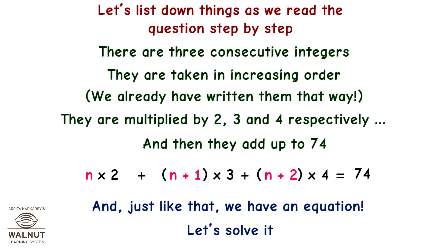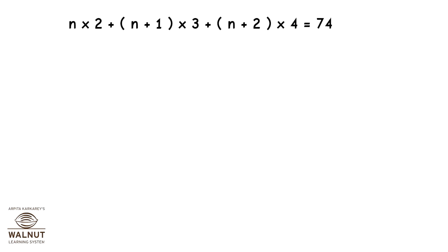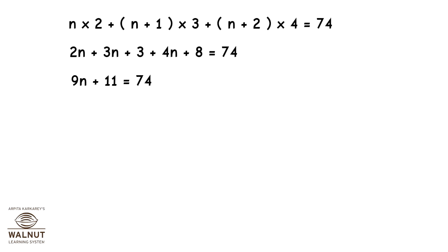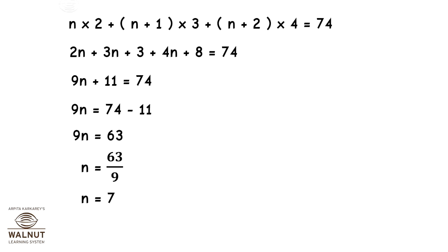Let's solve it. We get 2n plus 3n plus 3 plus 4n plus 8 equals 74. Therefore 9n plus 11 equals 74. Therefore 9n equals 63. Therefore n equals 63 divided by 9, so n equals 7.